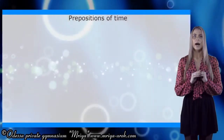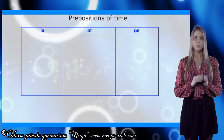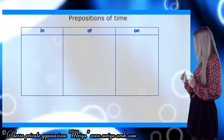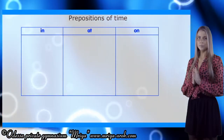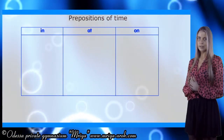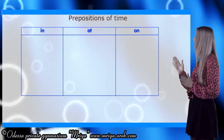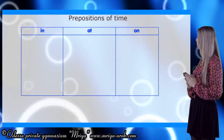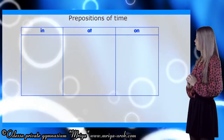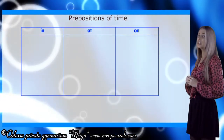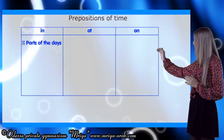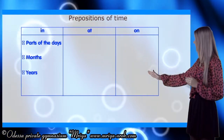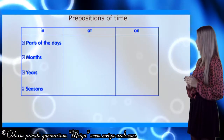Now let's revise everything we have already discussed. I want you to look at the table behind my back. So here it is. There exist three prepositions in English which we use with time: preposition 'in', preposition 'at', and preposition 'on'. We use preposition 'in' with parts of the day, months, years, and seasons.